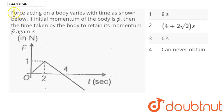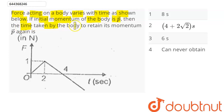The question is: force acting on a body varies with time as shown below. If the initial momentum of the body is P vector, then what is the time taken by the body to retain its momentum P vector again?